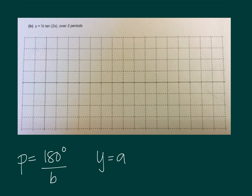In graphing a tangent function, we could first identify the period, and the period can be obtained by using the formula 180 degrees over b, if the tangent function is of the form a tangent bx plus c.